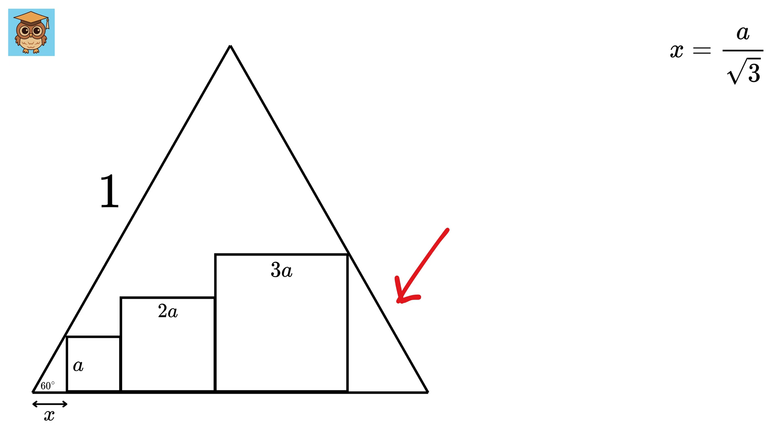Now, consider this triangle. Label this side as y. This is also 60 degrees, so again we can use tan of 60, which will be equal to this side, or 3a upon y.